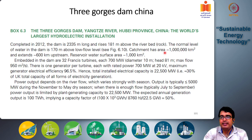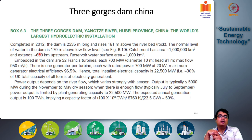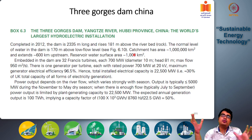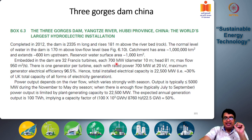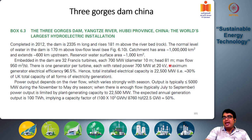The Three Gorges Dam captures water over a catchment area of more than 1 million square kilometers and extends 600 kilometers upstream. The reservoir surface area is 1,000 square kilometers. The dam houses 32 Francis turbines, each with 700 megawatt capacity. The diameter of each turbine is 10 meters, the water head under capacity conditions is approximately 81 meters, and the maximum flow rate is 950 cubic meters per second per turbine.